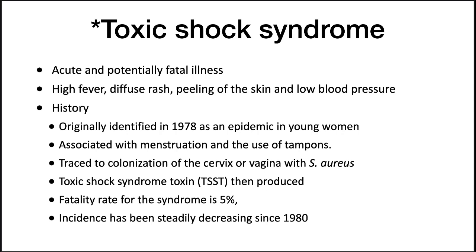Toxic shock syndrome is yet another toxin-related illness attributable to S. aureus. This disease is an acute and potentially fatal illness. It manifests with a high fever, diffuse rash, peeling of the skin, and low blood pressure. The malady was originally identified in 1978 as an epidemic in young women associated with the use of tampons during menstruation. Investigations traced it to the colonization of the cervix or vagina with S. aureus, inoculated to this site by the insertion of a tampon. As the bacterium grows, it produces the toxic shock syndrome toxin. The fatality rate for the syndrome was 5%.